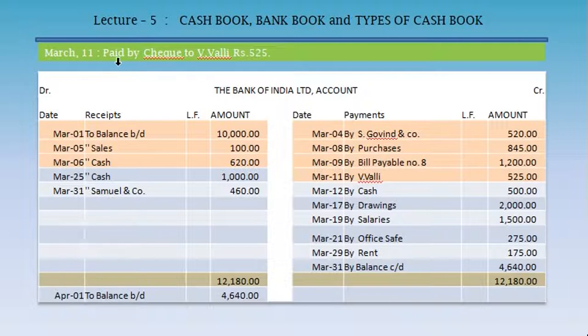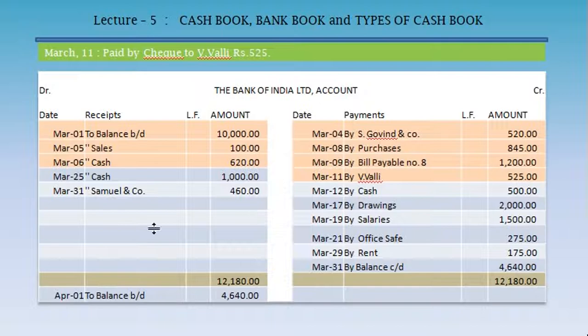Next transaction: paid by cheque to V. Vali, Rs. 525. Again this is a cheque payment, so it is a bank transaction. We record it in the Bank of India account on the credit side as it is a payment: March 11, by Vali, Rs. 525.